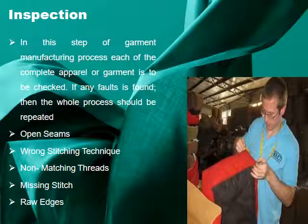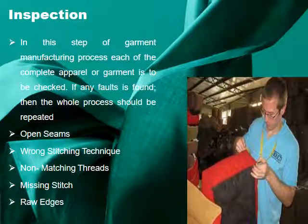The next step is inspection. In this step, each completed garment in the manufacturing process is checked. We check the seam, wrong stitching, and non-matching thread. If any fault is found, the whole process will be repeated.